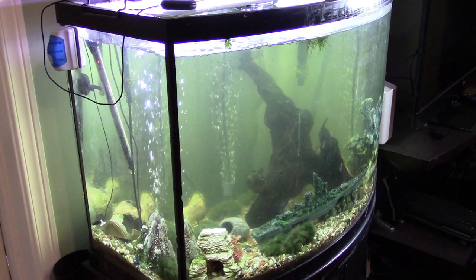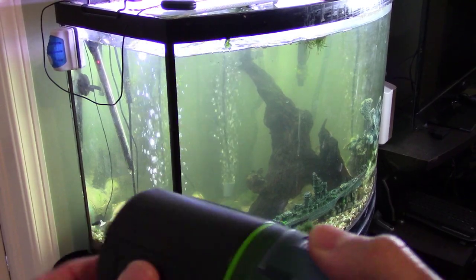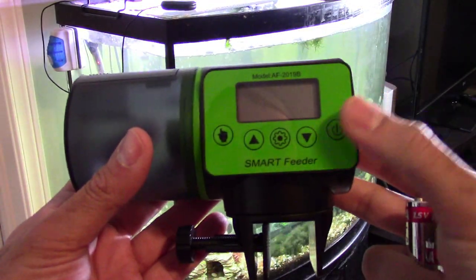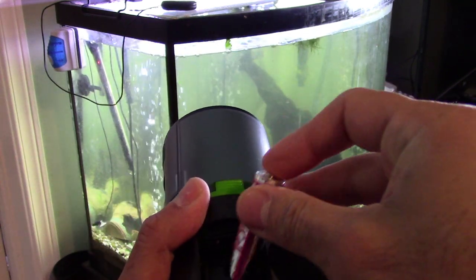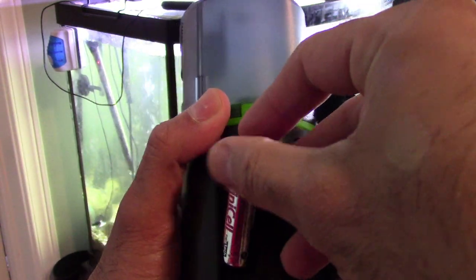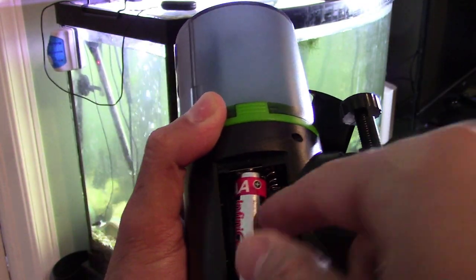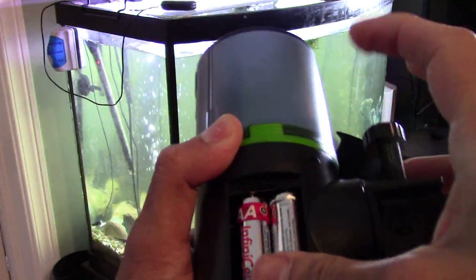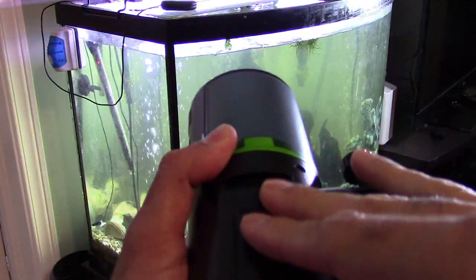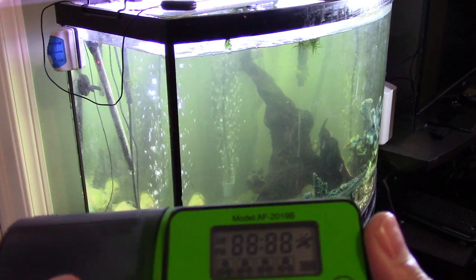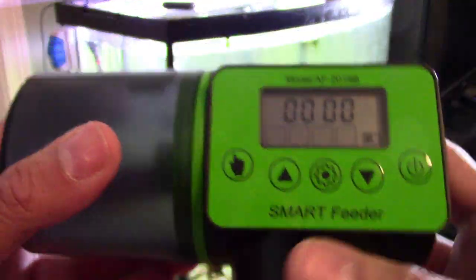Alright so here's my fish tank. So first thing I'm going to do is, here's the feeder. I'm going to go ahead and put in two AA batteries. The unit turns on as you can see.